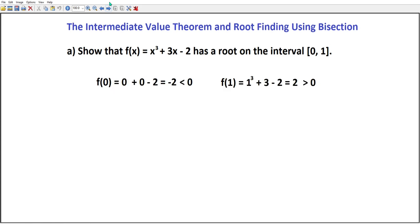First, show that the function f(x) = x³ + 3x - 2 has a root on the interval [0,1]. We compute f(0), which is 0 + 0 - 2, or -2, which is less than 0. f(1) is 1³ + 3 - 2, which is 2, which is greater than 0. And since one endpoint has a positive value and the other endpoint has a negative value, that means someplace in between the function value must be 0 by the Intermediate Value Theorem.